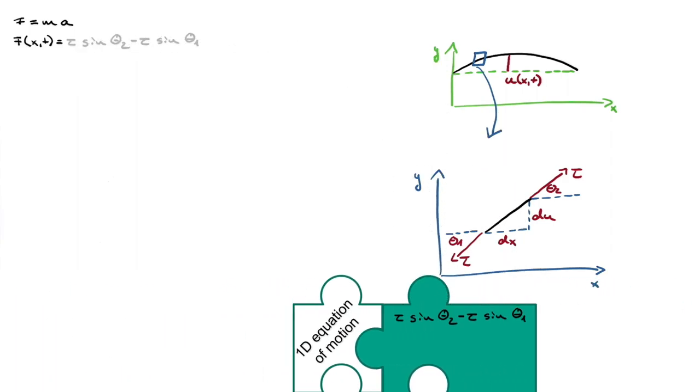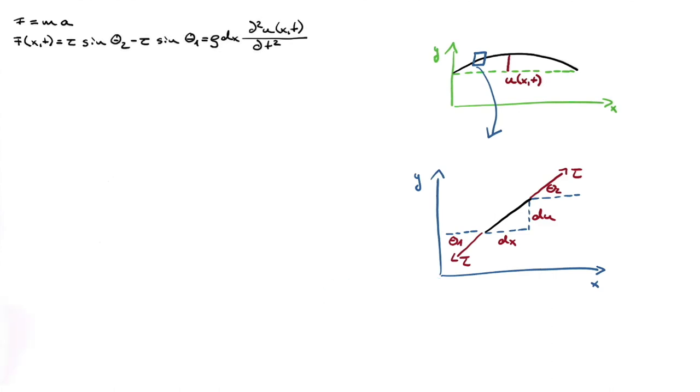On the other side of the equation, we substitute the mass m with the density rho times the length dx of the section of the string reduced to 1D. The acceleration is the second-order partial derivative of the displacement u over time. If the displacement values are small, the angle theta is also small and the sine can be substituted by the gradient.